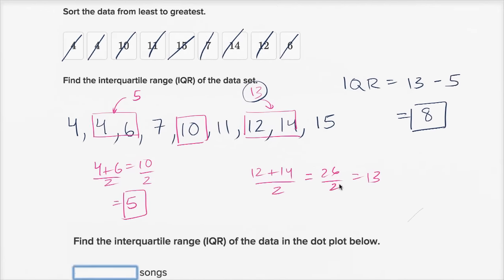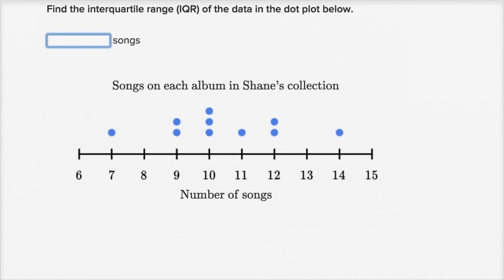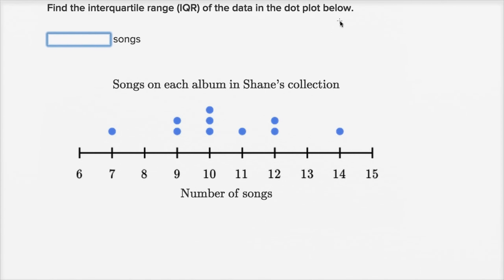Let's do some more of these. Find the interquartile range of the data in the dot plot below — songs on each album in Shane's collection. So let's see what's going on here. This is just representing the data in a different way, but we could write this again as an ordered list.